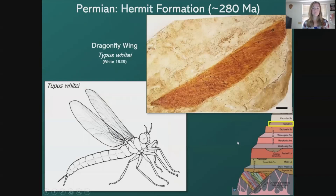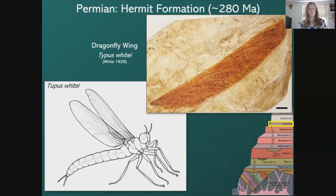The Hermit Formation contains a lot of really interesting fossils. Starting with insects, here is a dragonfly wing called Typus idae — this is a rendition of what the dragonfly might have looked like about 280 million years ago. Keep in mind the scale bar is only a centimeter, so this wing was very large, meaning the dragonfly itself had to have been extremely large. A lot of insects were pretty big during this time.